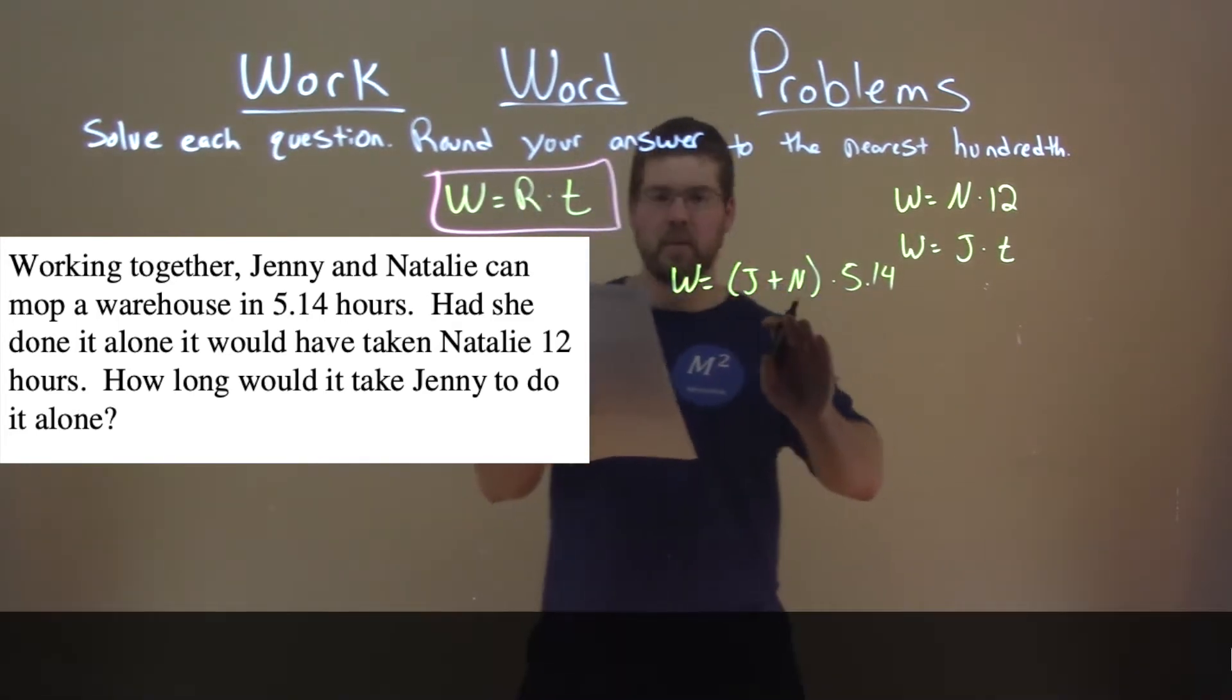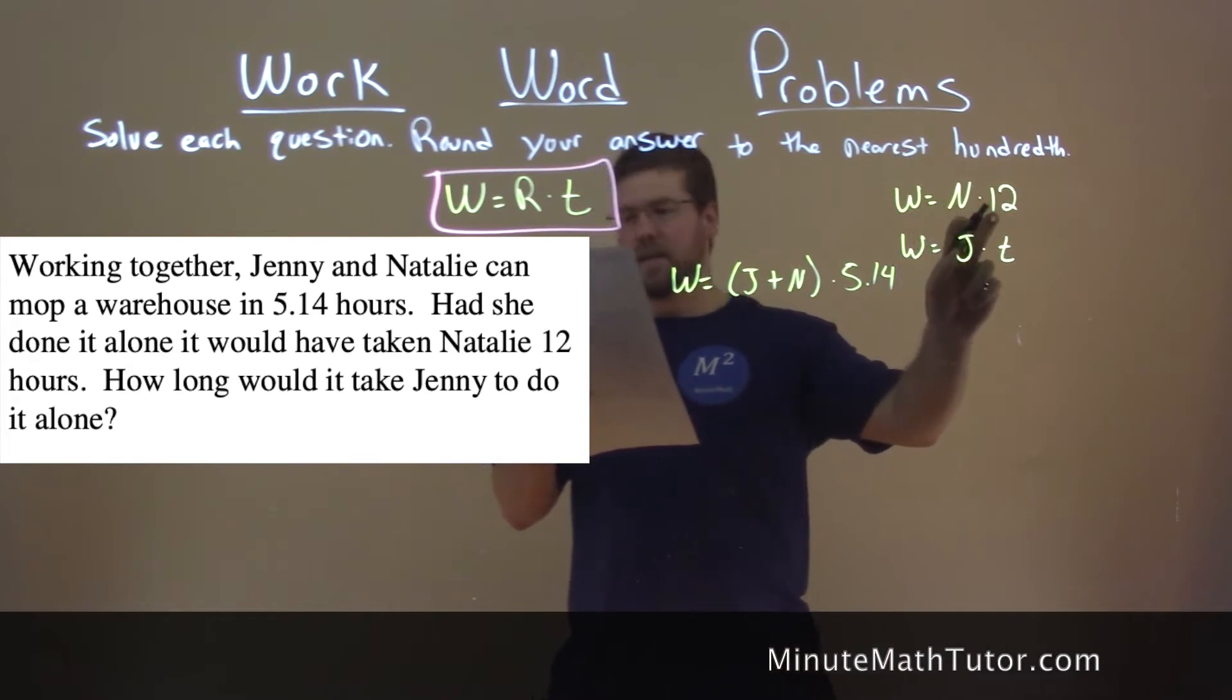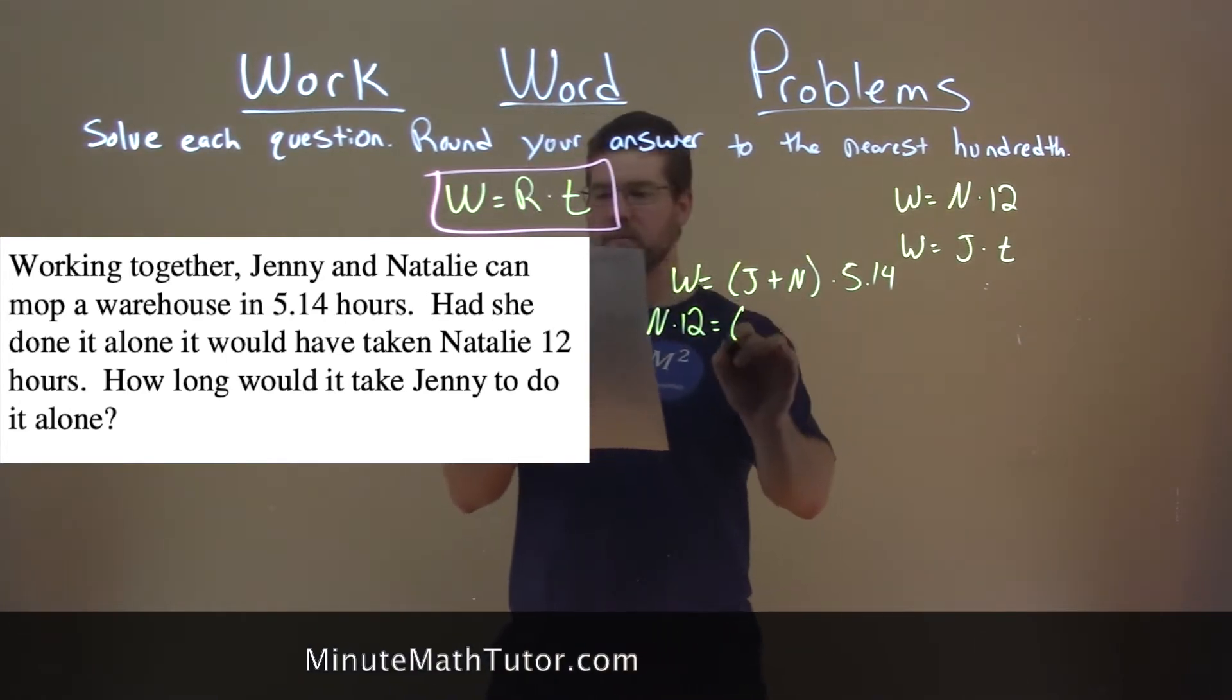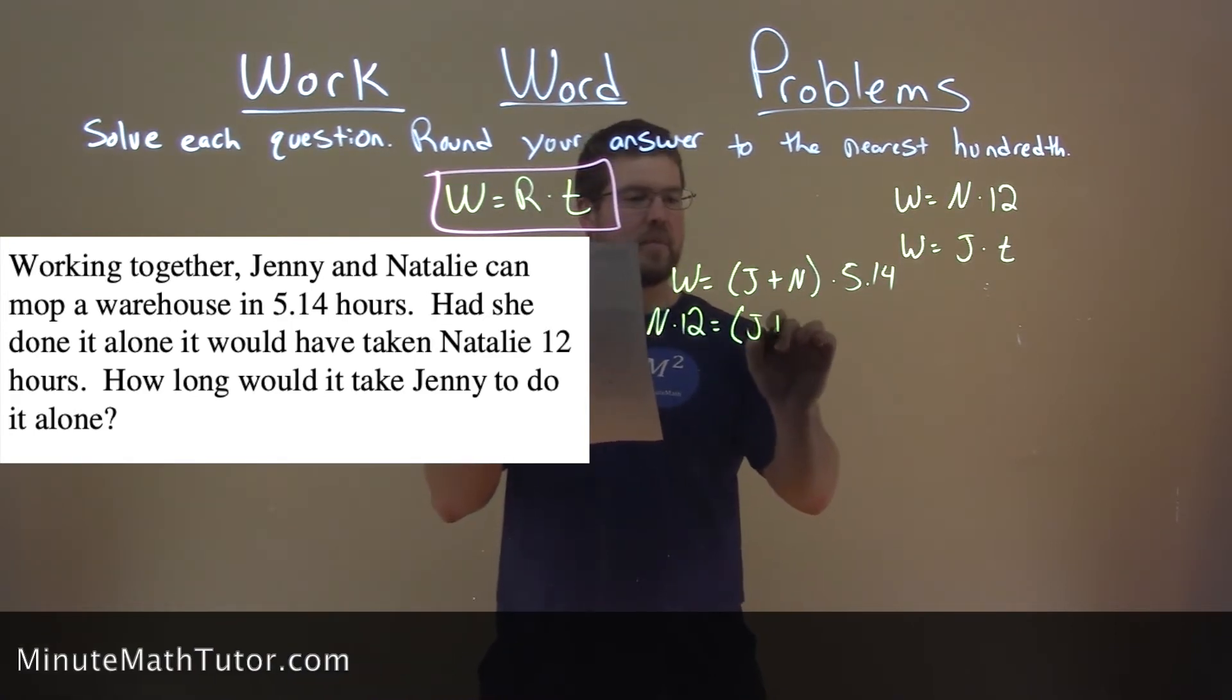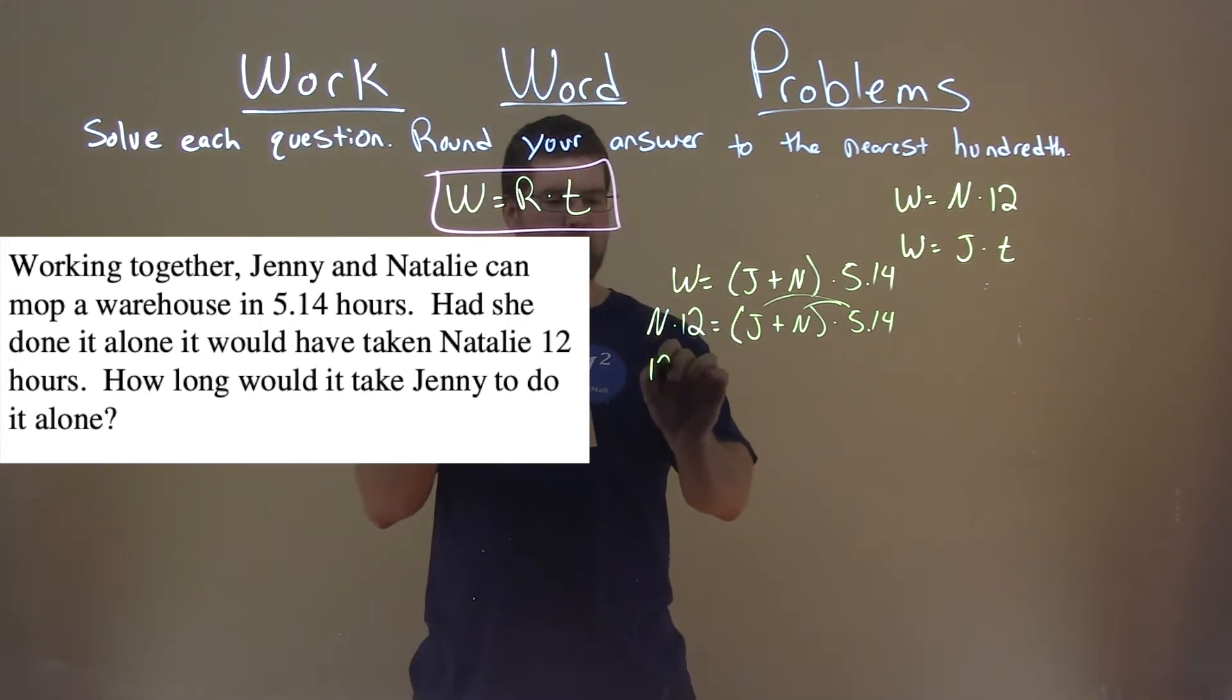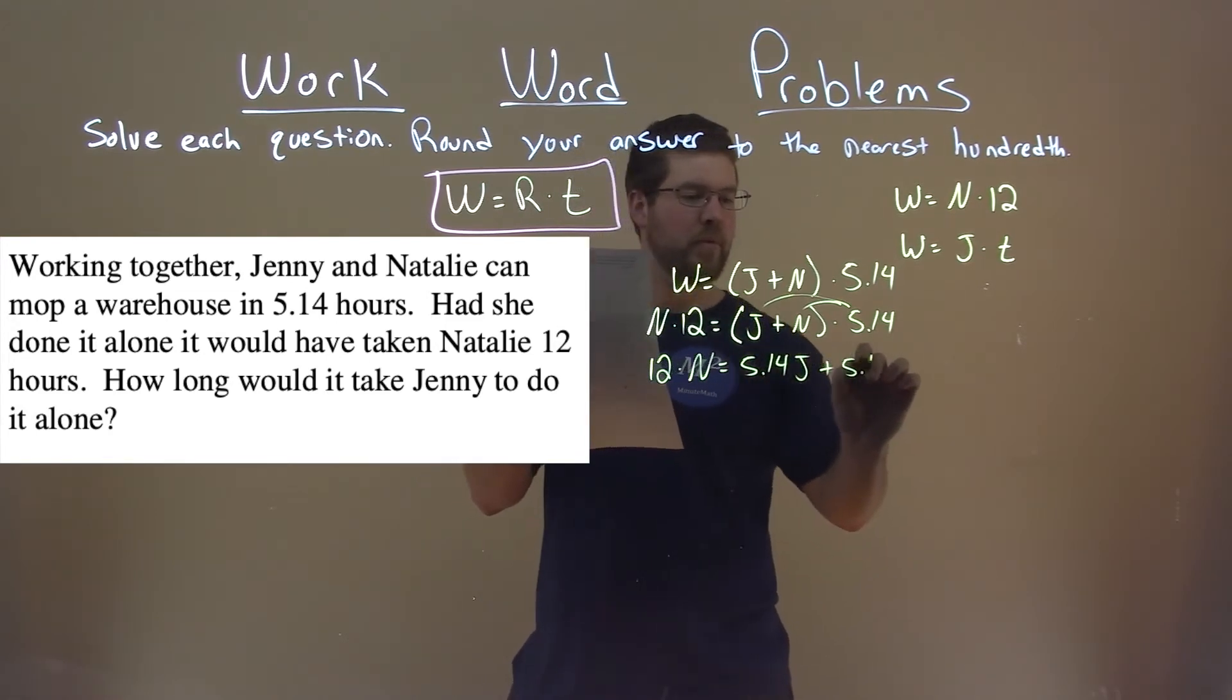So now, what we're looking to do, we want to substitute what we can. We know that work rate is equal to N times 12. We have N times 12 here, that same work, is equal to J plus N times 5.14. Distribute that across to both parts here, and we have 12N is equal to 5.14J plus 5.14N.